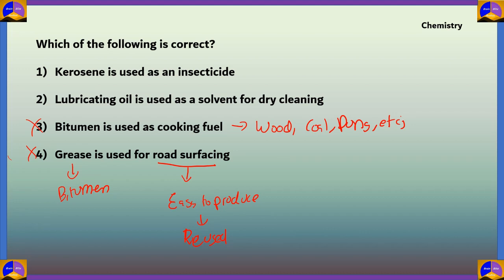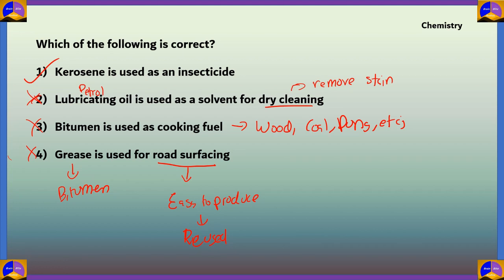Option 2 says lubricating oil is used as a solvent for dry cleaning. A solvent for dry cleaning should be able to remove stains from a garment. Lubricating oil only reduces friction and cannot remove stains, so this is incorrect. Instead, petrol is used to remove stains in dry cleaning. Therefore, the correct answer is option 1: kerosene is used as an insecticide, since kerosene has been shown to kill insects.